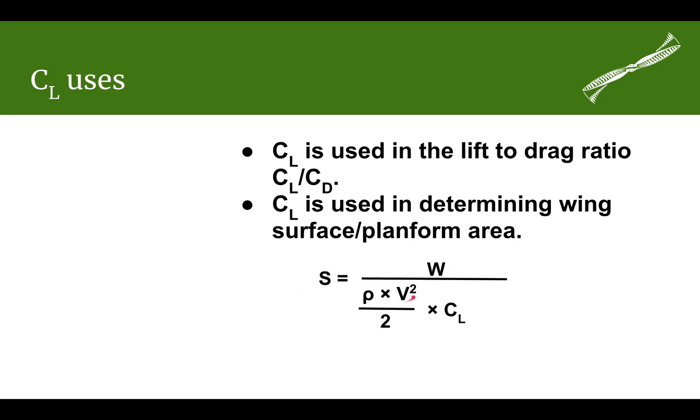If you want to know what velocity you'll have with a certain weight, surface area, and coefficient of lift, you can move velocity to the numerator and S to the denominator, then take the square root. You'll get the velocity for a certain surface area, weight, and coefficient of lift.